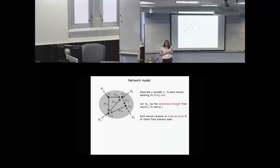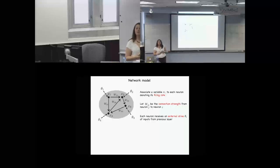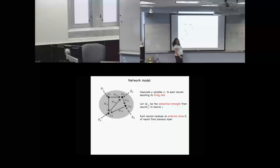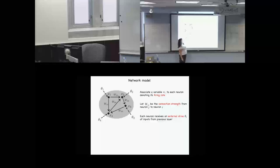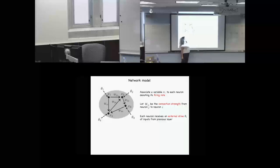You can, in fact, think of this as a directed graph with weights along the edges. The weight tells you: a larger W43 than W32, for example, means that X3 has a stronger impact on the firing of X4 than X2 does on X3.